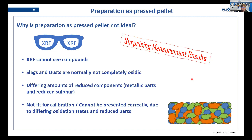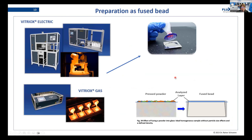At some point it might happen that your pressed pellet gives measurement results that do not really fit your routine measurements. As soon as you are out of this routine and outside of your calibration range, and as soon as they are different from what you are measuring on a daily basis, it might happen that they do not fit into your calibration anymore and the whole thing cannot be presented correctly due to the differing oxidation states and reduced parts, meaning your measurement results will simply not be true.